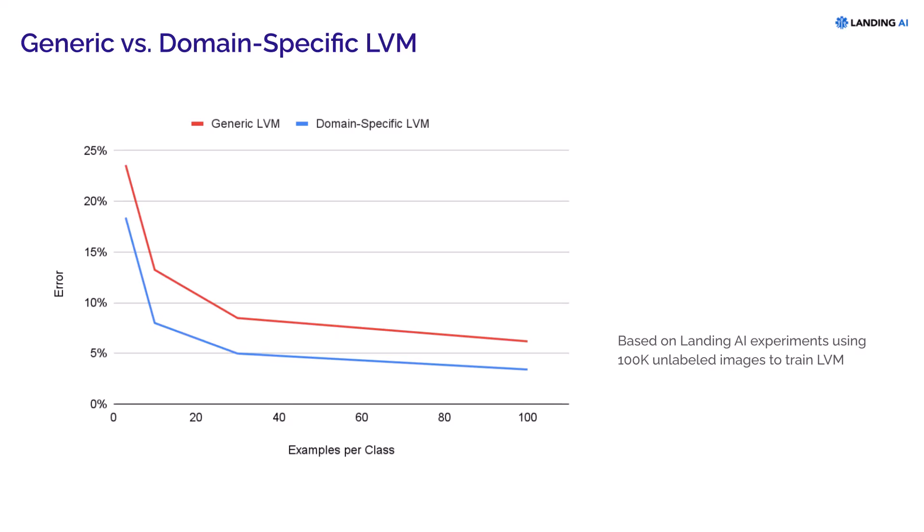But what is that really good for? It turns out that if you have a domain-specific LVM, you can use it to quickly build a computer vision application for that domain. After training a domain-specific LVM on 100,000 unlabeled images, this graph shows the amount of labeled data needed to achieve different accuracies. The red curve is the performance of a generic LVM, but with a domain-specific LVM, error rates are much lower.